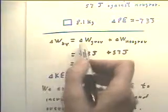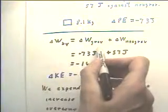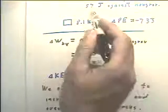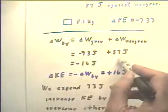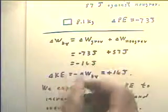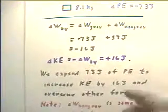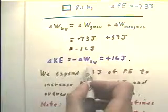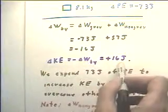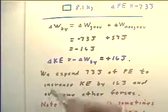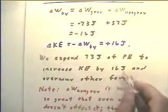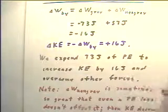Let's analyze it carefully. The delta W gravitational is going to be negative 73 joules — that's your change in potential energy. And the delta W non-gravitational, that's 57 joules that the system does against non-gravitational forces, so that the work done by the system is negative 16 joules. This equals the change in kinetic energy — it's equal and opposite — so the kinetic energy change will be positive 16 joules.